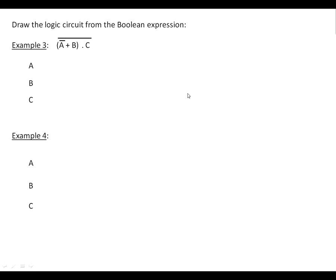Another thing you might be expected to do is they might give you a Boolean expression and you've got to draw the logic circuit from that. My rule for this is to work from the bottom upwards. We start off with A, B, and C on the bottom line. The next thing we encounter is NOT A, so let's draw NOT A.